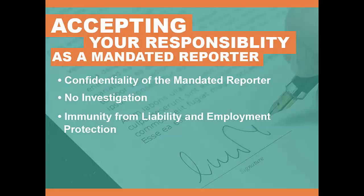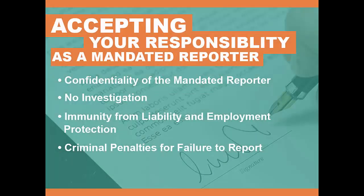The Child Protective Services law provides that as a mandated reporter, when operating in good faith while making a report, the reporter has protection from employment discrimination and immunity from liability in civil and criminal proceedings. In instances where someone does not act in good faith or makes a false claim, it is considered a misdemeanor of the second degree. Except for those who need to know, a mandated reporter should not tell others about the suspected abuse, child sexual abuse, or filing of the report, or the mandated reporter could lose immunity from liability and employment protection. The Child Protective Services law provides that when you, as a mandated reporter, willfully fail to make the required report of suspected child abuse, you commit a crime that can be charged and prosecuted by the county district attorney.